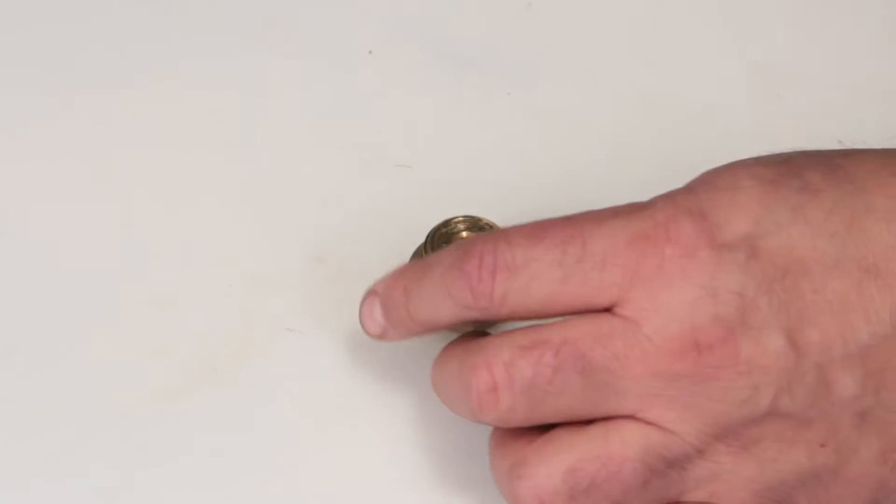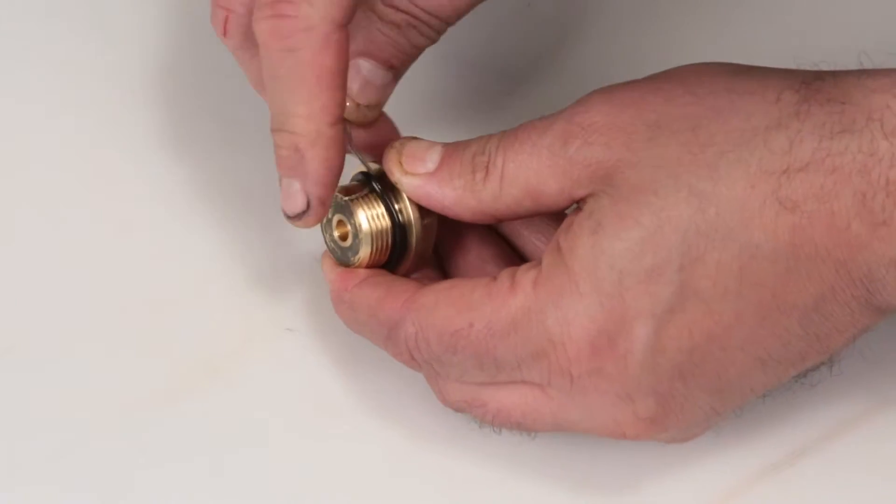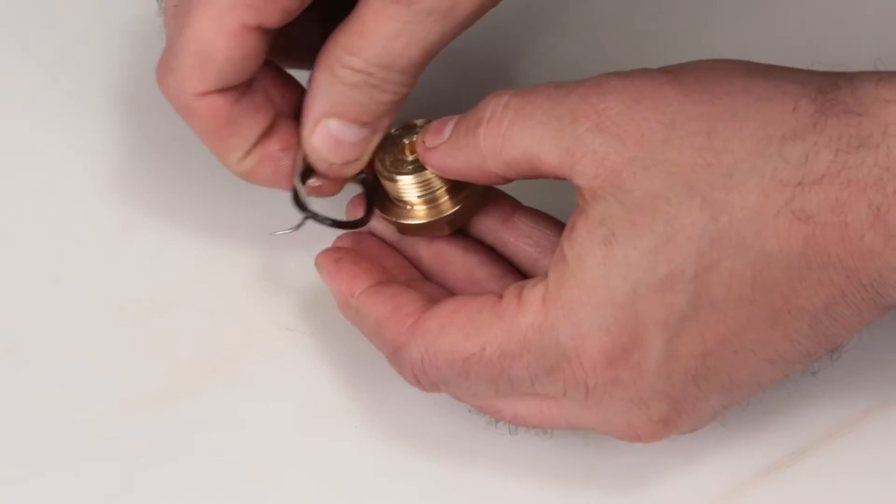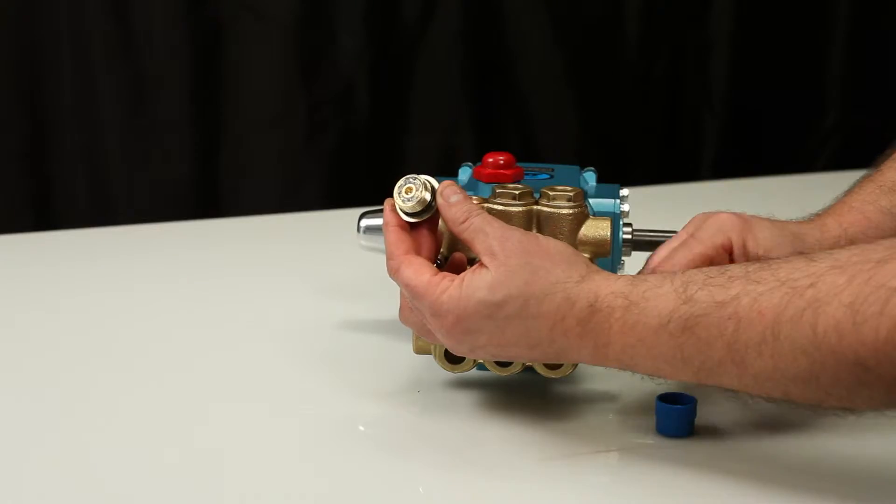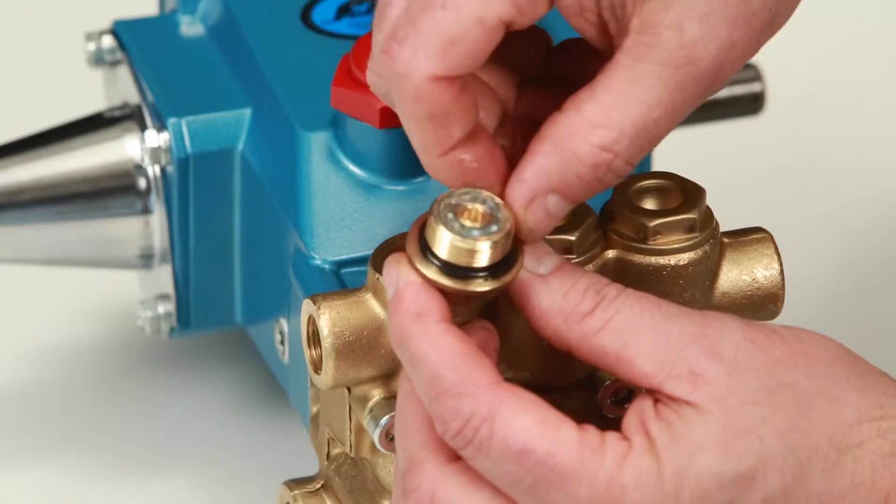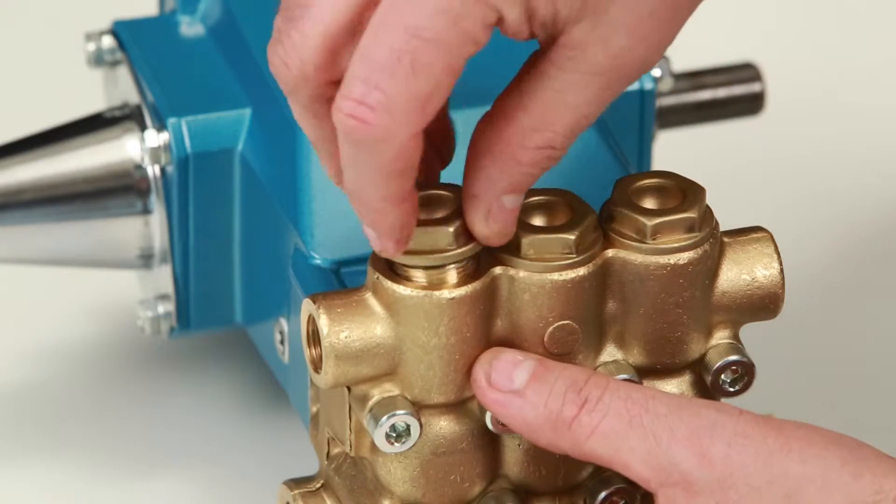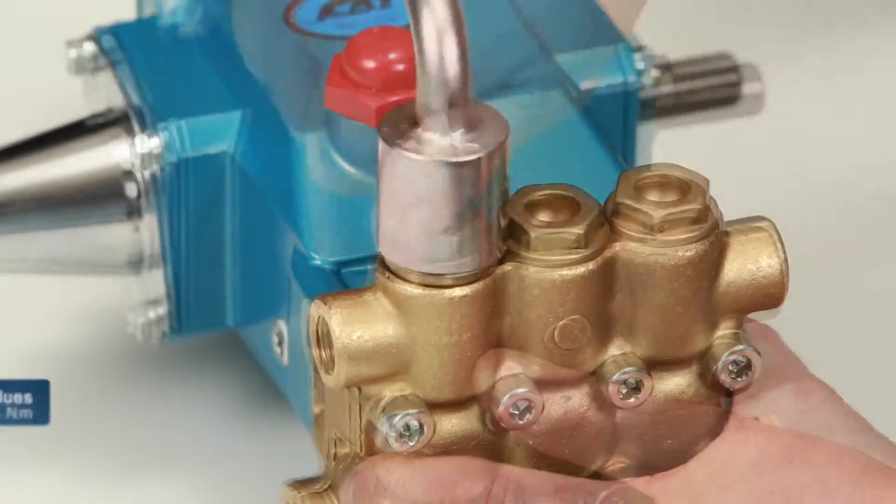Before reinstalling the valve plug, using a small screwdriver or pick, replace the O-ring provided in the valve kit. Lubricate the O-ring and reinstall the valve plug. Torque to specification.